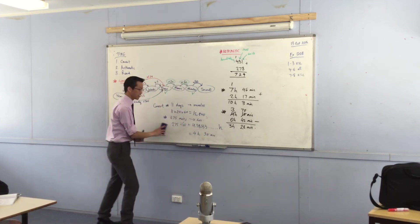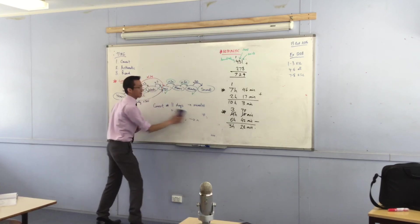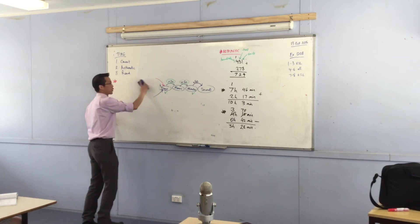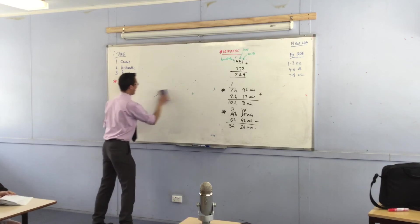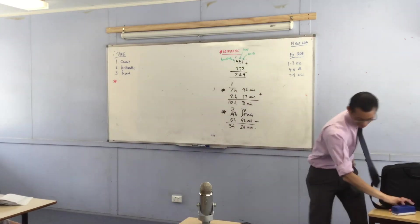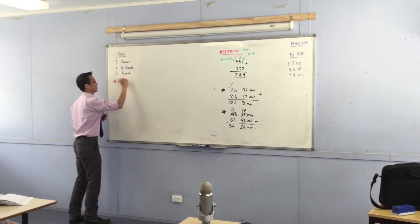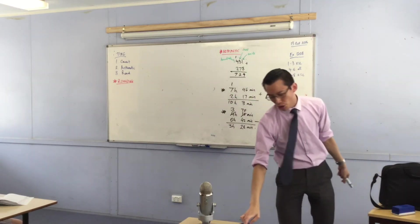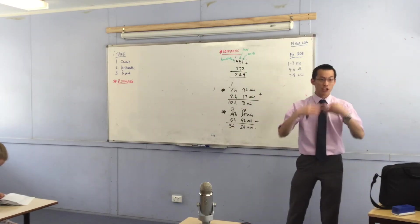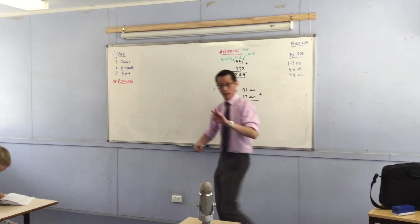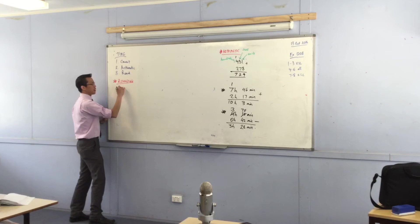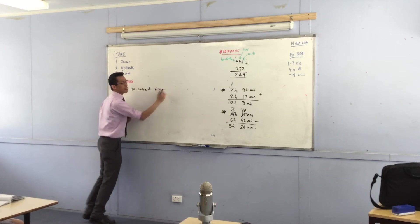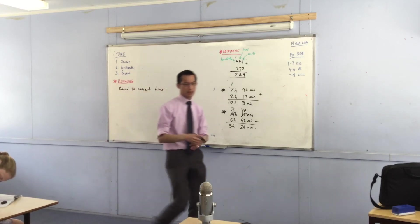Last one. We did conversion. We did arithmetic. What did I say was the last one? Rounding. This will take like 2 minutes. Or if you round it, 0 minutes. Now you guys are so good at this. I'm just going to give you three. I'm just going to go straight to the examples. So I want us to write this down. Round these three quantities. Round them to the nearest hour.